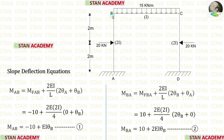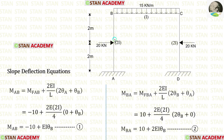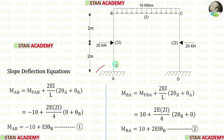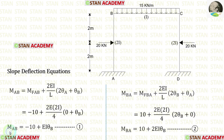Now let us write the slope deflection equations for column AB, applying the fixed end moments. The moment of inertia for AB is 2I, so we apply 2I instead of I. The length of AB is 4 meters. At point A there is a fixed support, so there is no slope and θA equals zero. Finally, we derive two slope deflection equations for column AB.